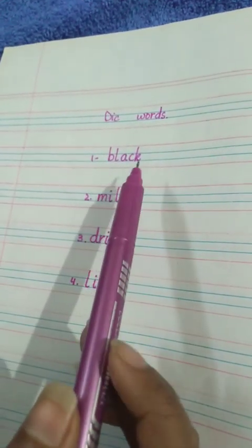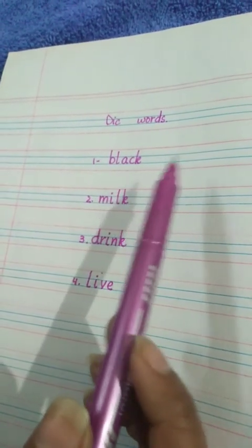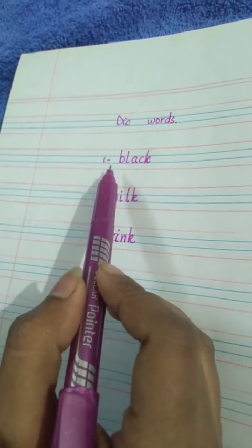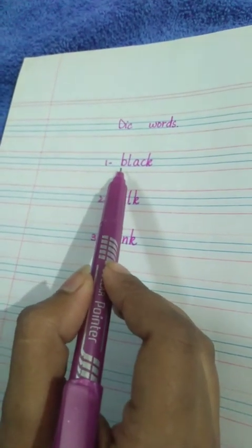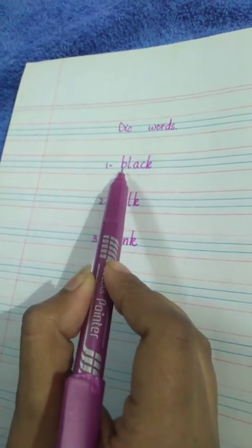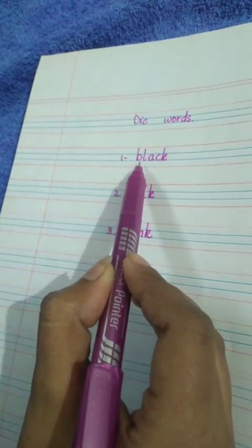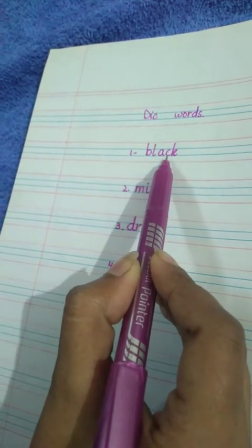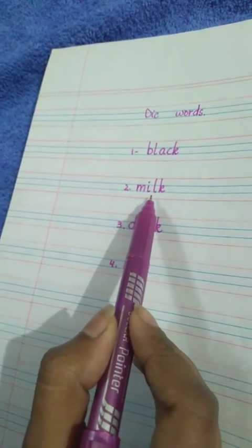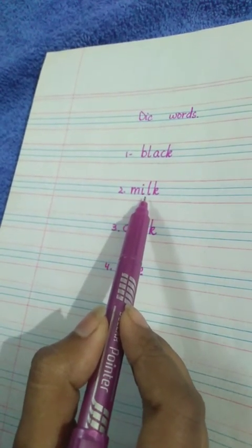Okay, dictation words again read. Number one is B-L-A-C-K, black. Number two is M-I-L-K, milk. M-I-L-K, milk.